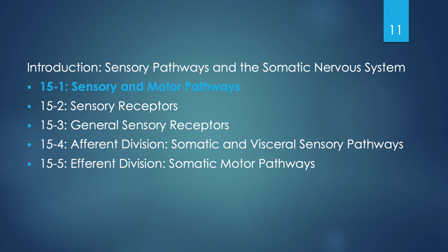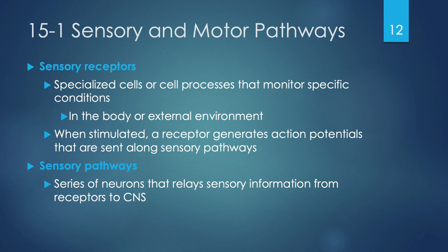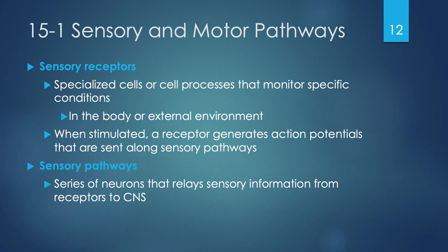We're discussing how we make the body move — specifically the somatic nervous system controlling contractions of skeletal muscles. We're focusing on sensation of our general senses and general movement via skeletal muscles. In section 15-1 we'll talk about how sensory stimuli create signals sent along sensory pathways, and how we respond with motor commands sent along motor pathways. Sensory receptors are specialized cells or processes on cells that continually monitor conditions specific to the type of receptor, monitoring both internal and external environments — called interoceptors and exteroceptors.